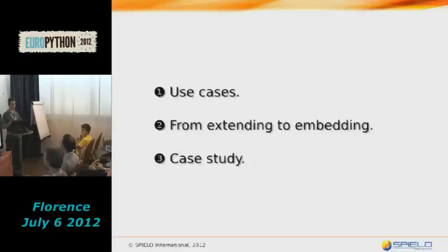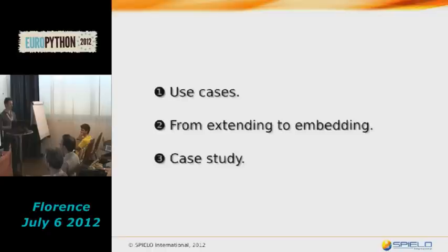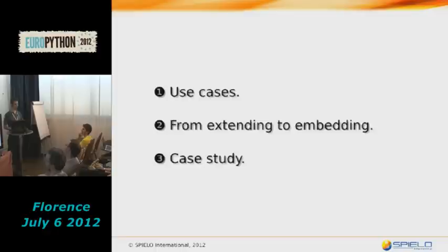I will first go through a number of use cases to explain what I mean by embedding a Python interpreter and why it might be useful. Then I'll show you the technical details. It turns out that embedding and extending Python have a lot in common — in both cases you're using the Python C API. I'll first go through a quick recap of writing extension modules, then show you the technical details of embedding the interpreter, and then talk about the thought process behind putting Python into our game engine, the specific challenges we faced, and how we solved them.